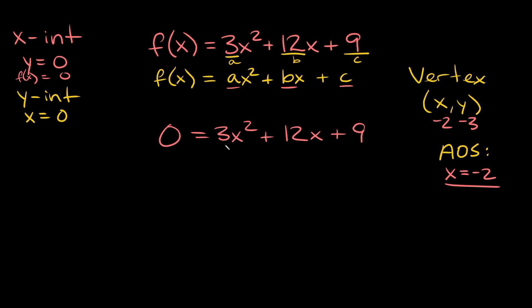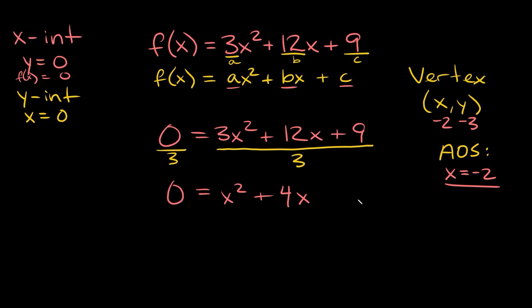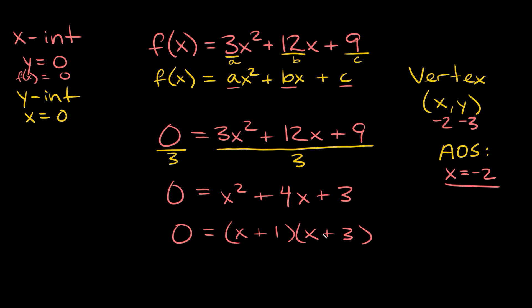One convenient thing: all three numbers are divisible by 3, so let's divide both sides by 3. Zero divided by 3 is 0; 3 divided by 3 is 1, so we get x squared; 12 divided by 3 is 4, so plus 4x; and 9 divided by 3 is 3, so plus 3. Now factoring: we need two numbers that multiply to 3 and add up to positive 4 — that's positive 1 and positive 3, since 1 times 3 is 3 and 1 plus 3 is 4.